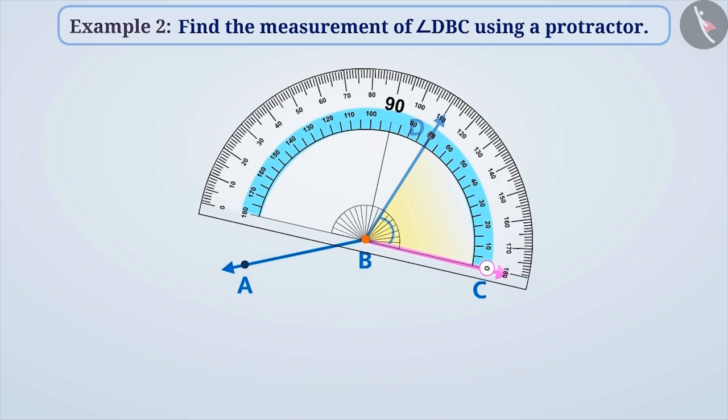Now we see that the other side of the angle represents the 70th part of the inner scale. So the angle will measure 70 degrees. In this way, we can say that angle DBC is equal to 70 degrees.